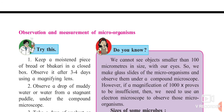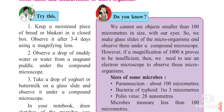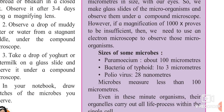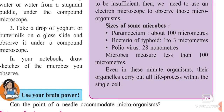Microorganisms are measured in nanometers and micrometers. You require a microscope with very high magnification power — even a compound microscope has limits, so you require an electron microscope. Sizes of microbes: paramecium is about 100 micrometers; bacteria of typhoid is about 1 to 3 micrometers; poliovirus is about 28 nanometers. Microbes measure less than 100 micrometers, yet they carry out all life processes within a single cell.